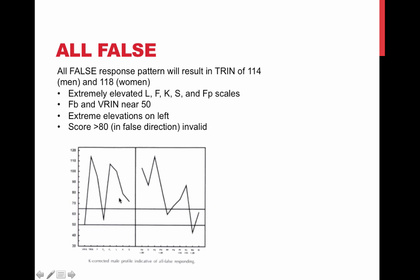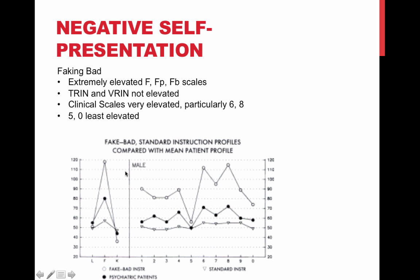When these validity scales show us that the profile is invalid, we don't even look at the clinical scales — we can't do much with it. Here's a negative self-presentation. The inverted V with the white dots is another fake bad. The black dots show a psychiatric profile — your F is still just at an 80, so in this case we're saying this person just has a lot going on. They're experiencing a lot of psychological pain, but the profile is not invalid. It does give us that indication that they are crying out for help.